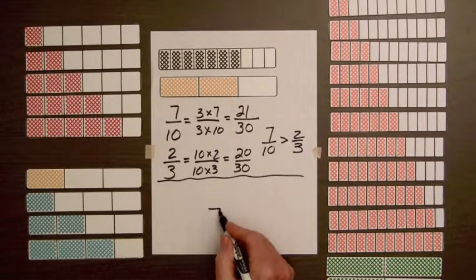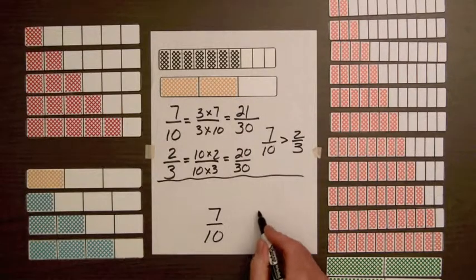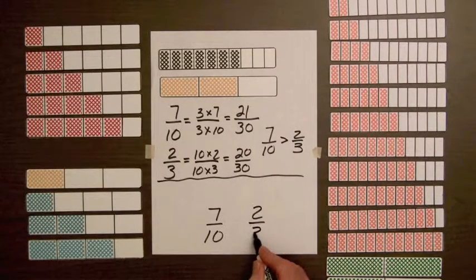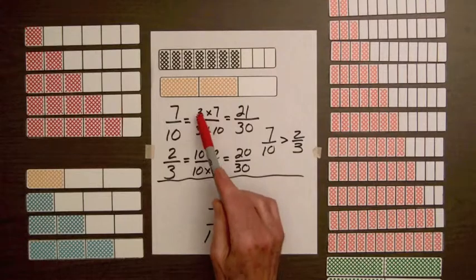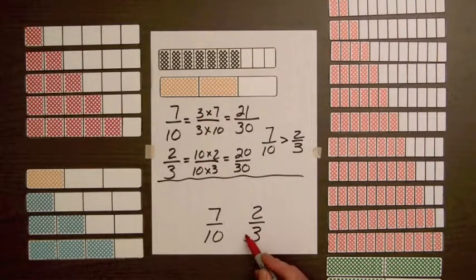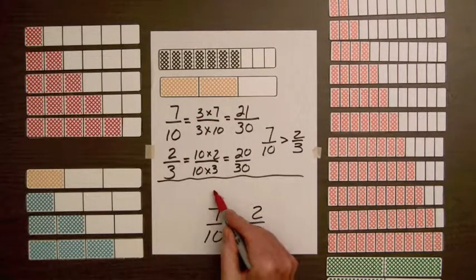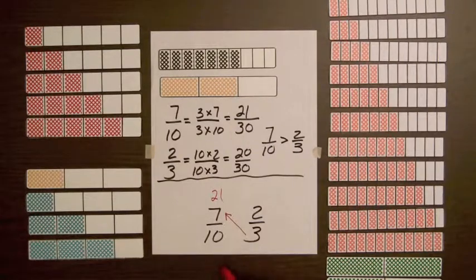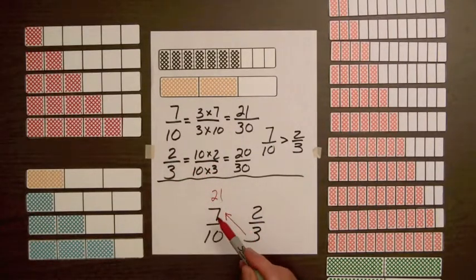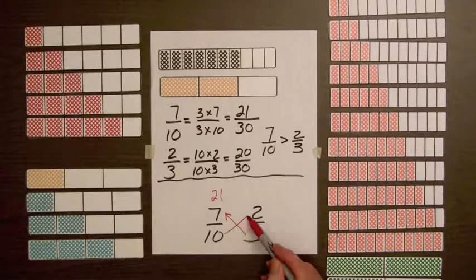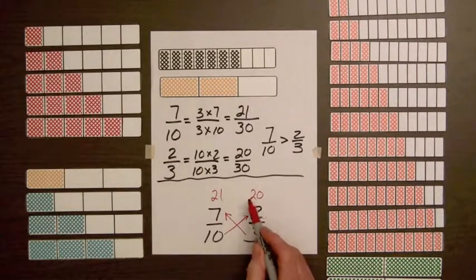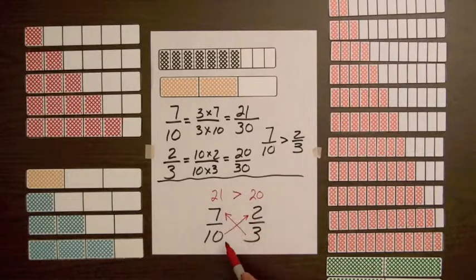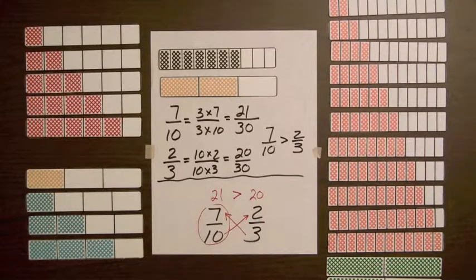Let's write down our fractions here: 7 over 10, 2 over 3. Now up above we multiplied 7 over 10 both by 3, so we multiplied 3 times 7 and got 21. We multiplied the 2 and the 3 by 10, so all we need to do is multiply 10 times 2. That's going to give us 20. Since 21 is greater than 20, we know this fraction over here is greater than 2 thirds.